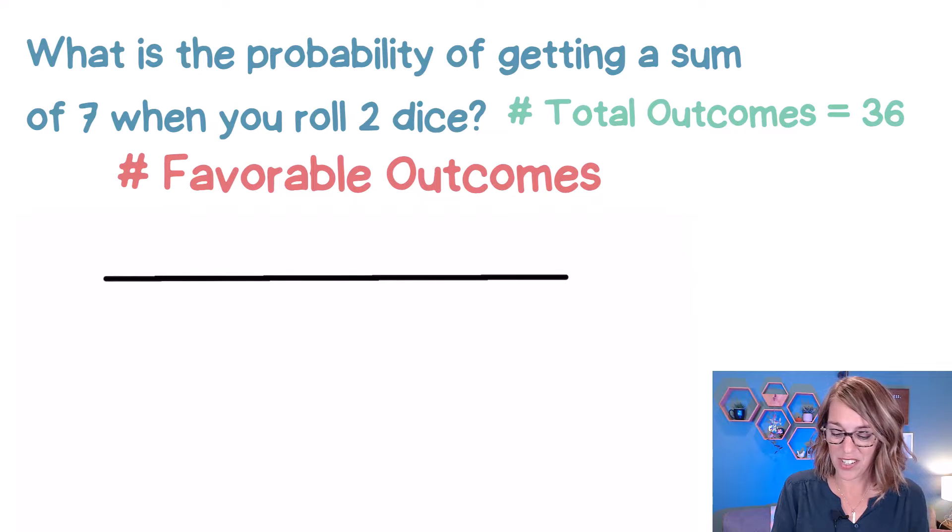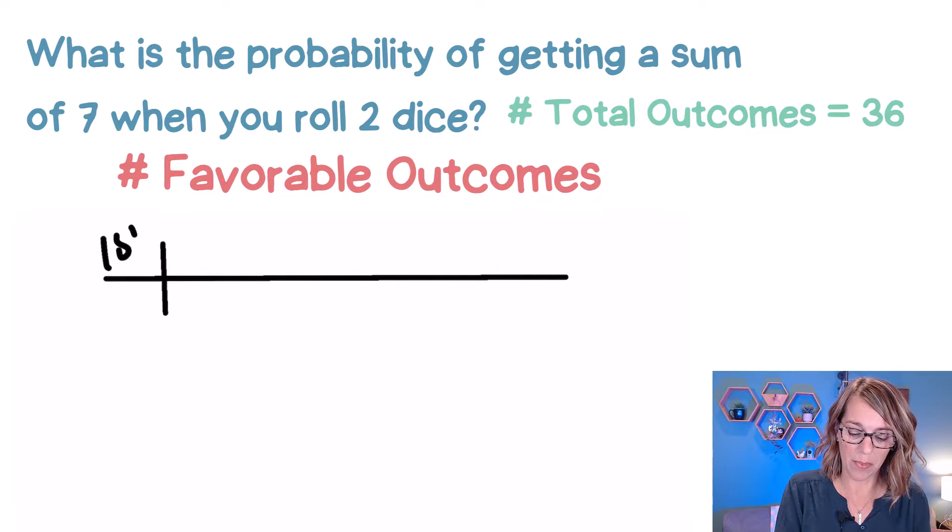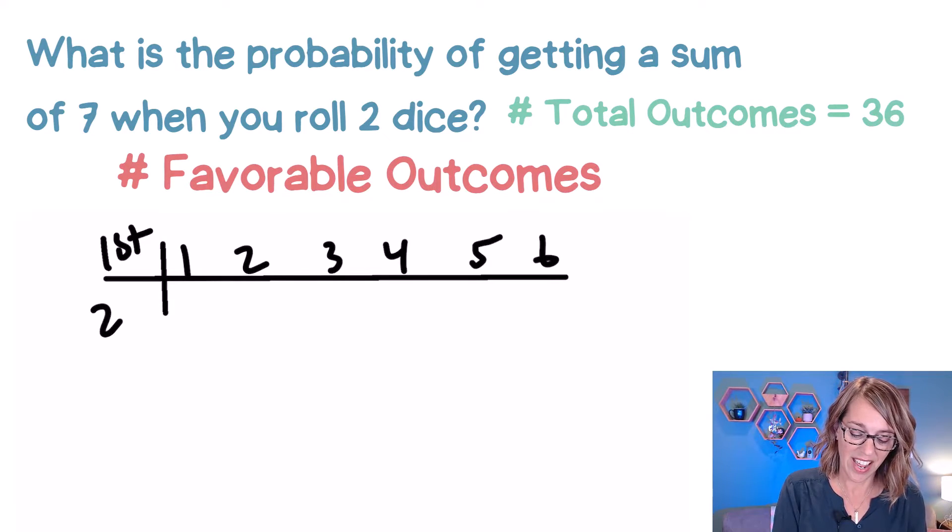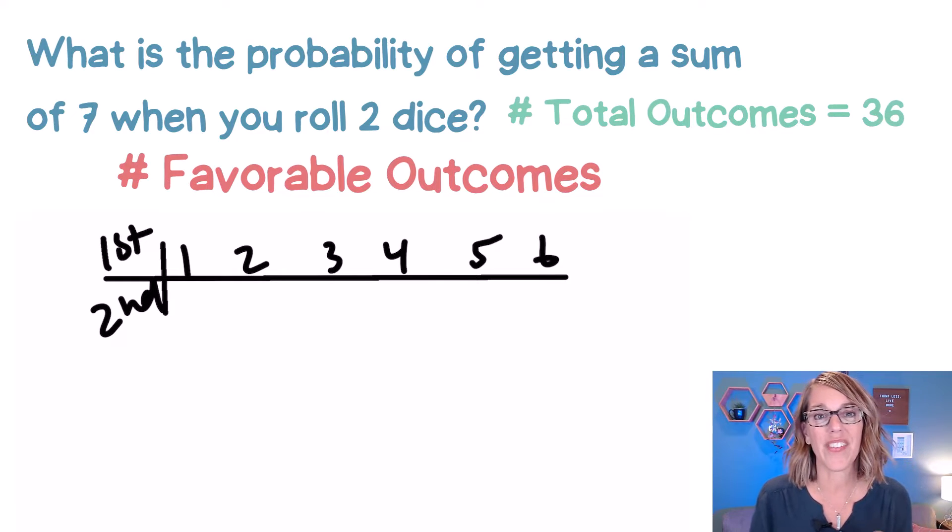Let's go ahead and make ourselves a chart, and I'm just going to match up numbers that we can get on that first dice, one through six, and let's go ahead and match them with numbers on the second dice that add up to seven.